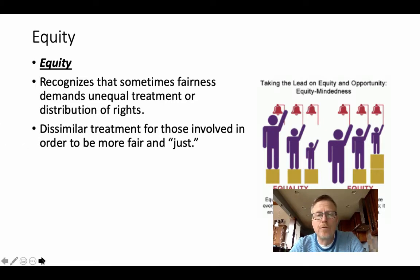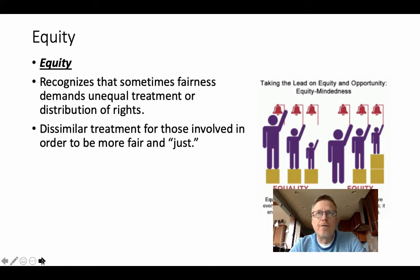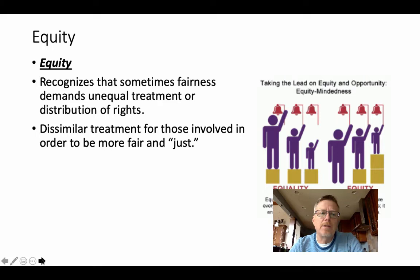For example, somebody who has dyslexia might get extra test time on the ACT. If it's a 40-minute reading test and somebody gets 60 minutes, that's technically an inequality. But we might understand that it's more fair, because in order for them to be successful they have to have adjustments in the conditions. Equity involves dissimilar treatment, and sometimes people notice that dissimilar treatment and they don't like it.